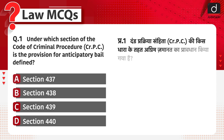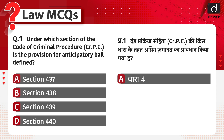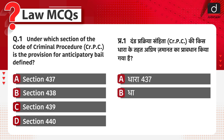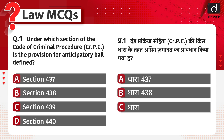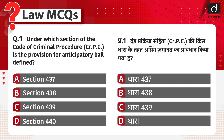दण्ड प्रक्रिया संहिता की किस धारा के तहत अग्रिम जमानत का प्रावधान किया गया है? धारा 437, धारा 438, धारा 439 या फिर धारा 440? इसका सही जवाब है Option B, धारा 438. The correct answer is option B, Section 438.